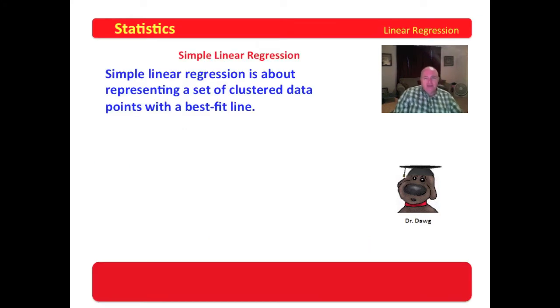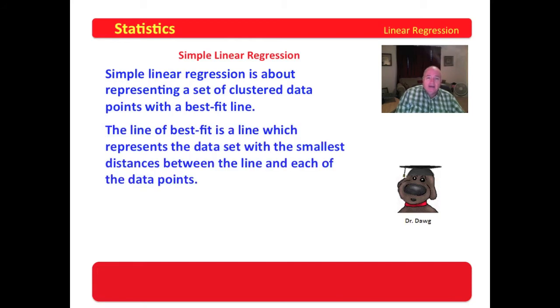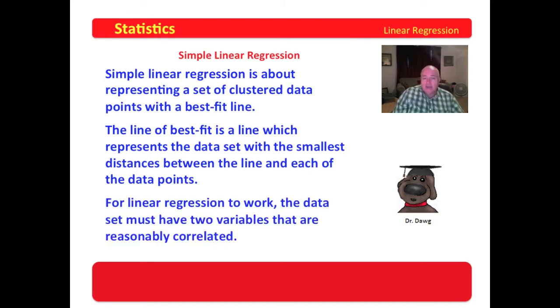As we examine simple linear regression, we need to remember that simple linear regression is about representing a set of clustered data points with a best fit line. The line of best fit is a line which represents the data set with the smallest distance between the line and each of the data points. And for linear regression to work, the data set must have two variables that are reasonably correlated.